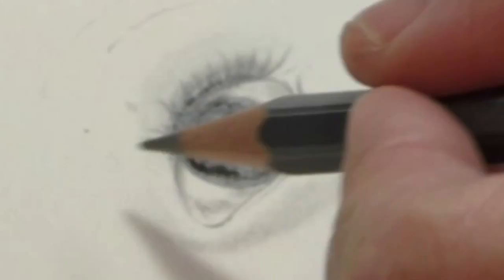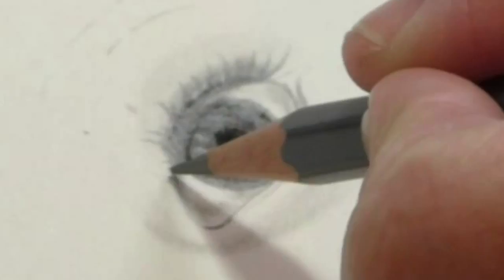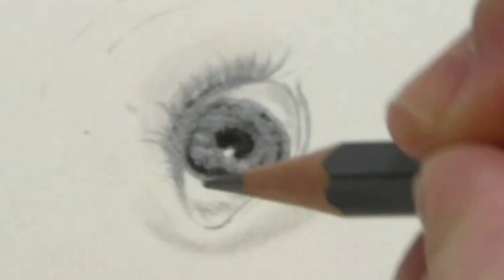Attention to detail. That's the top eyelid pretty much done, just a couple of little hairs here. Just doodle it in a little bit. That's the top eyelid done.